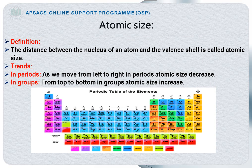The second property is Atomic Size. Definition: The distance between the nucleus of an atom and the valence shell is called atomic size. Trends in periods: as we move from left to right in periods, atomic size decreases. This is because the number of shells remains the same, but the number of electrons in the valence shell increases, increasing the attraction between the valence electrons and the nucleus, causing the atom to shrink. In groups, from top to bottom, atomic size increases, because the number of shells in an atom increases, so the distance between the nucleus and the valence shell increases, and the size of the atom increases.